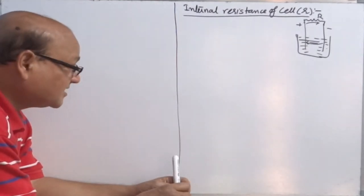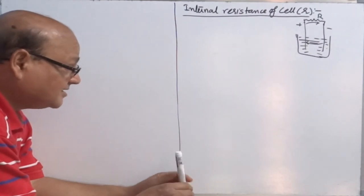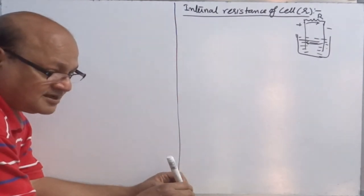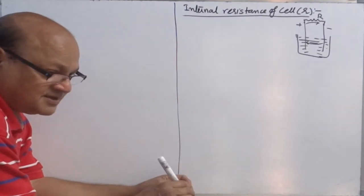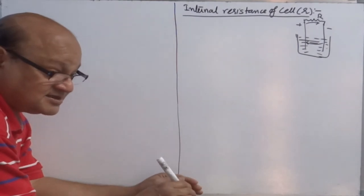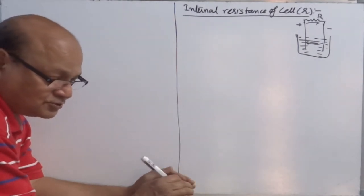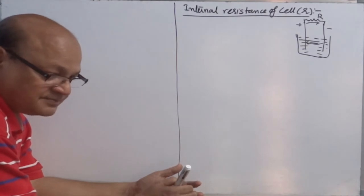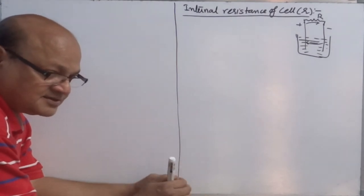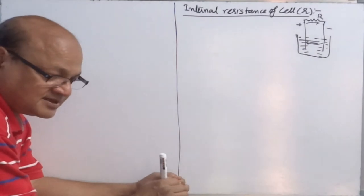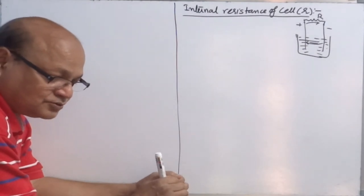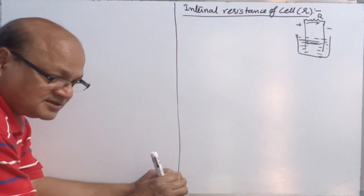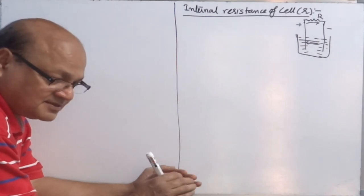An important thing: the internal resistance of the cell is always taken in series with the total external resistance connected in the circuit.